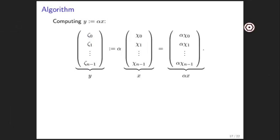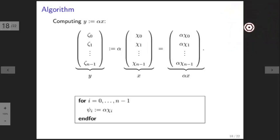And all we need to do is set the appropriate element of y to the corresponding element of x scaled by alpha. If we do this as an algorithm, then what we need to do is set psi i equal to alpha times chi i.